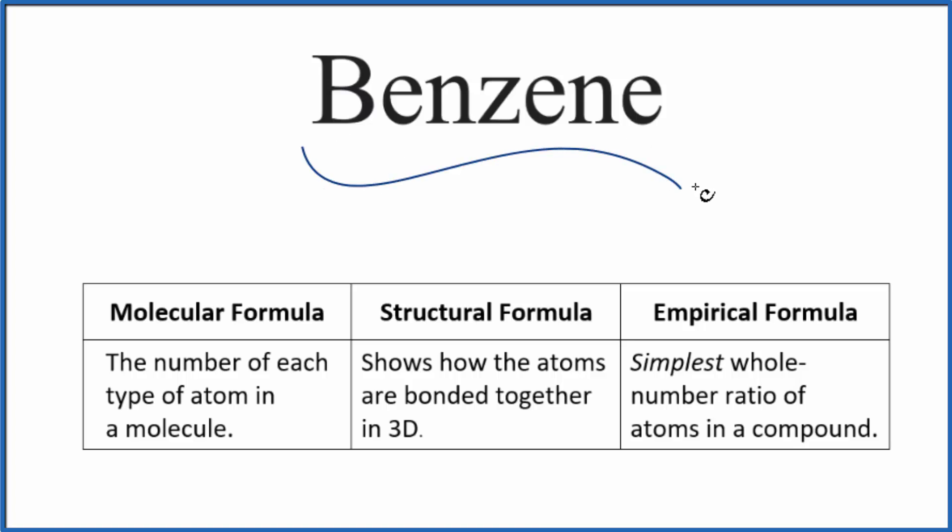If you look at benzene here, you really can't figure the formula out just by looking at the name. So you just need to memorize that benzene is C6H6. And this is considered the molecular formula. It tells us the number and type of each atom. So C6H6, that's our molecular formula.